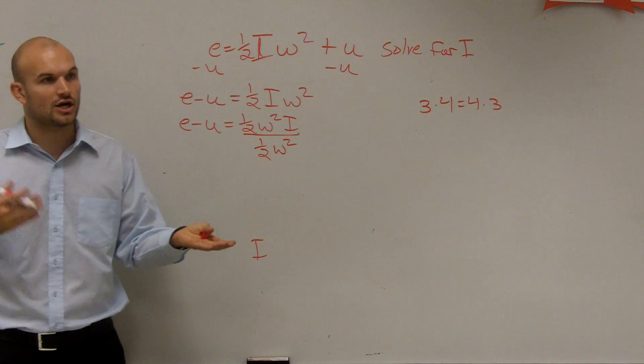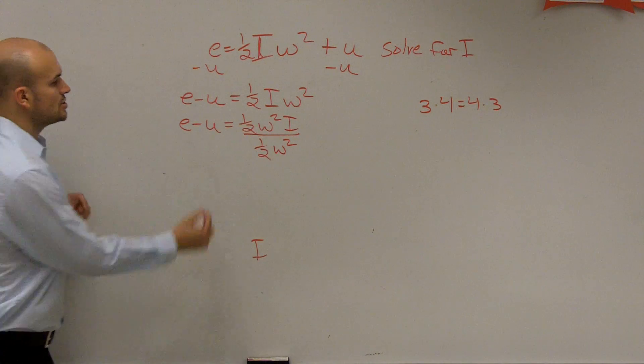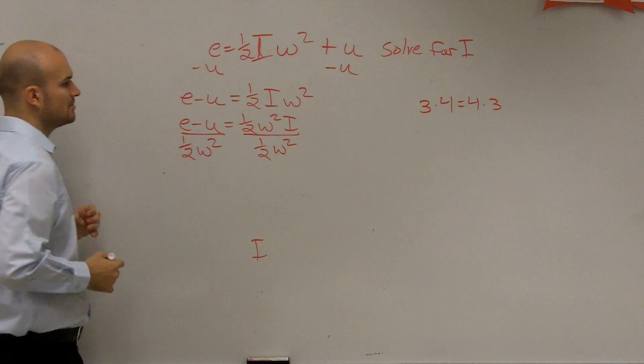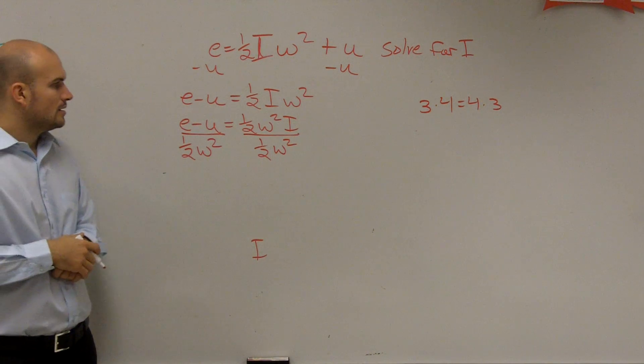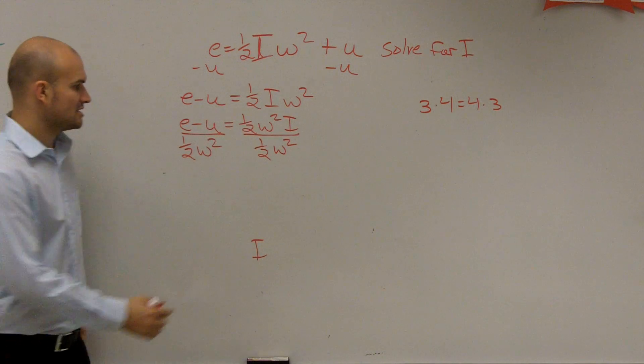Because multiplication and division are inverse operations. So they're going to undo each other. So I divide this by one half and divide by w squared. So these are going to equal one. One times i is just going to leave you with i.